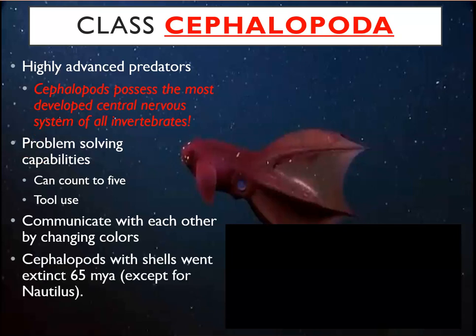The nautilus is a cephalopod that does have a shell and is essentially a living fossil. Most cephalopods, however, have vestigial shells — as you'll see in the squid dissection. Many shelled cephalopods went extinct during the K-T extinction 65 million years ago.